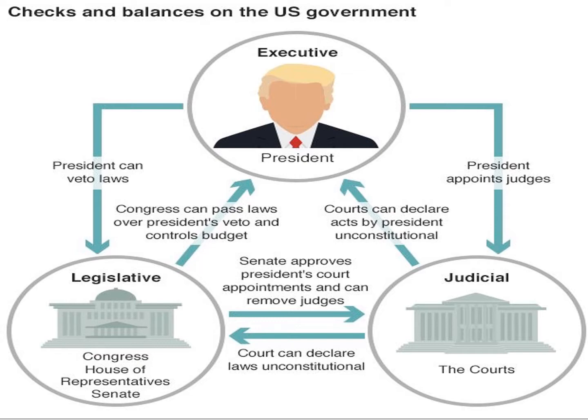For example, if President Trump declares an emergency presidential order that goes against one of our constitutional freedoms, the Supreme Court can declare his presidential act unconstitutional. The president does get to pick judges when one passes away or leaves that job; however, those judges have to be approved by the Senate — that's one way the legislative branch can check the judicial branch. The judicial branch can also declare laws themselves unconstitutional. So we see this checks and balances playing out time and time again.